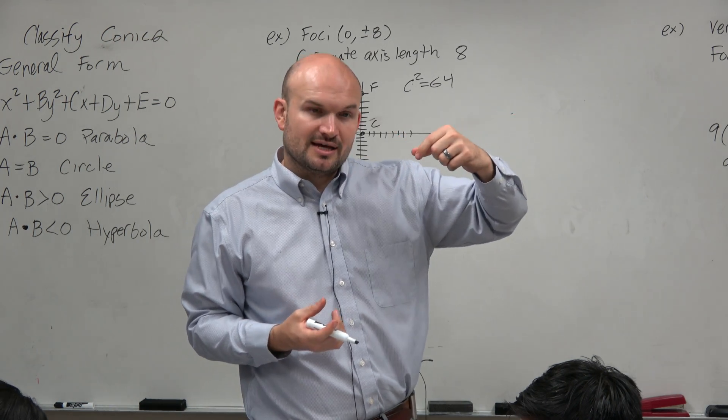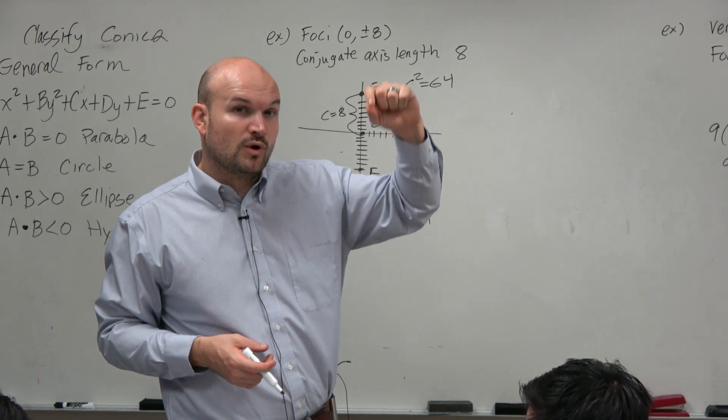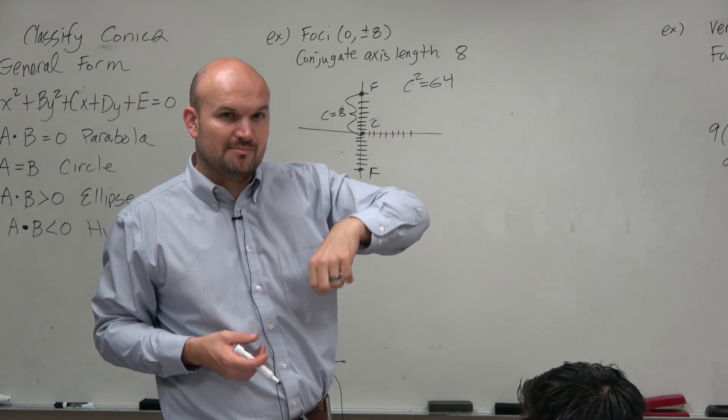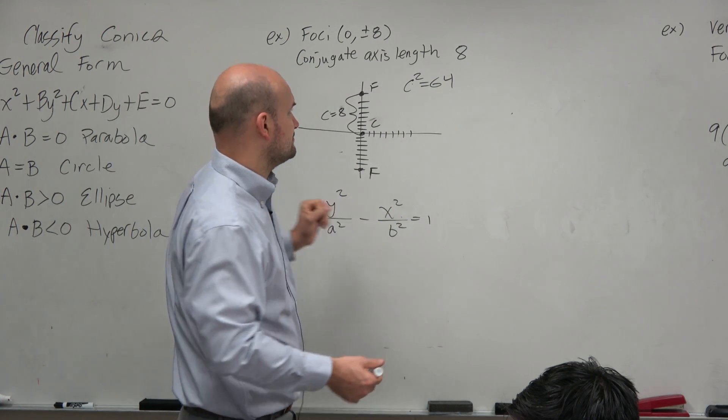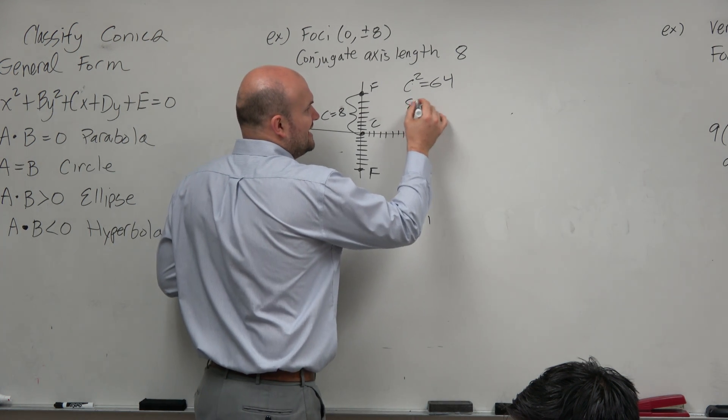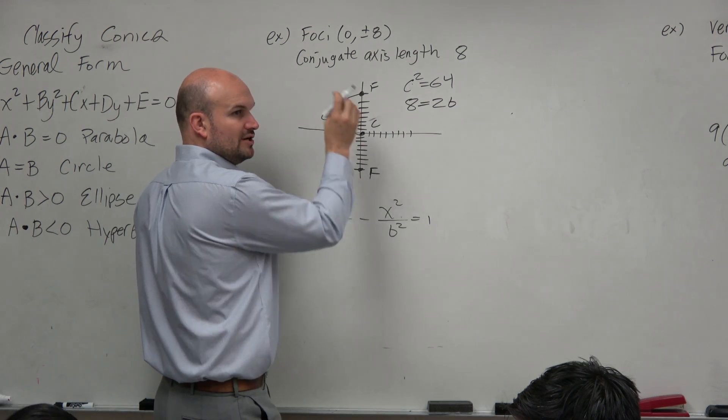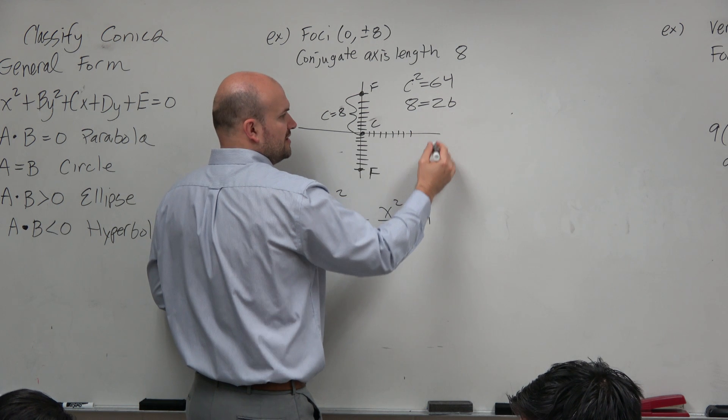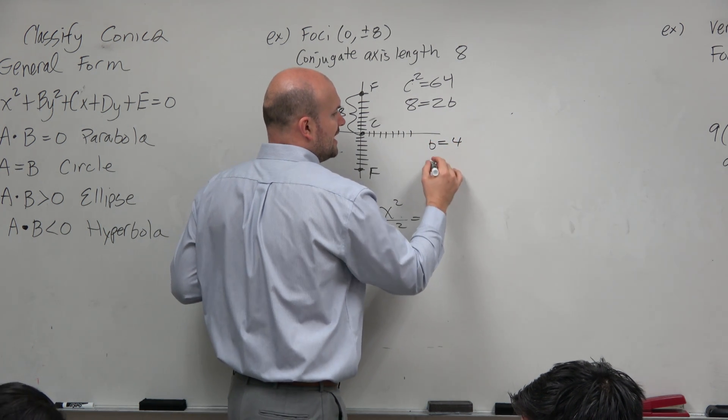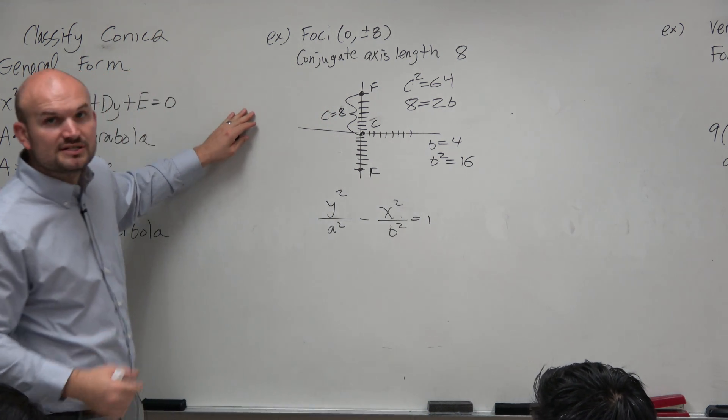And just like an ellipse, the distance from your center to your one co-vertex is going to be represented by b. So we can say 8 is equal to 2b, right? From the center to one co-vertex is b. So the distance from both of them is going to be 2b. So therefore, we could say b is equal to 4, and b squared is equal to 16.